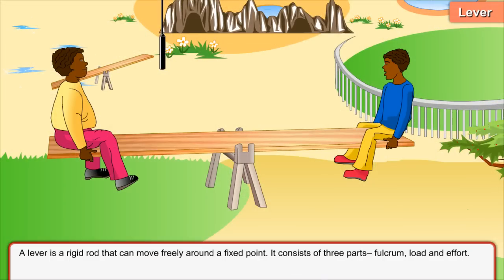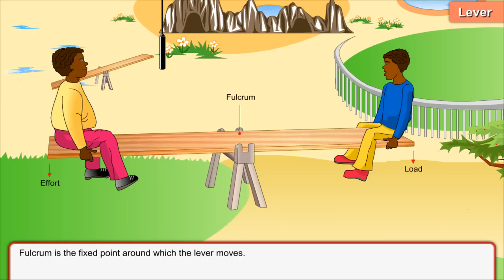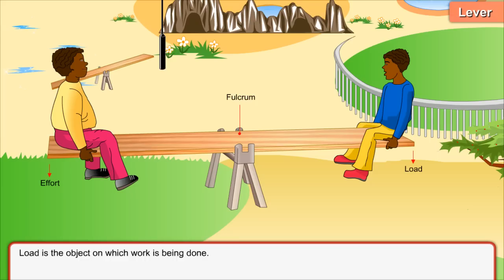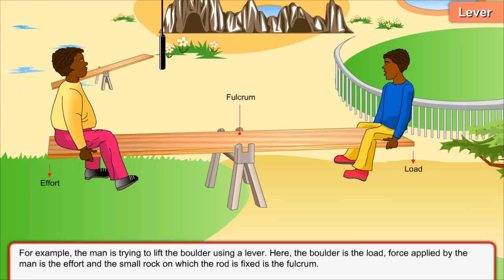Lever. A lever is a rigid rod that can move freely around a fixed point. It consists of three parts: fulcrum, load, and effort. Fulcrum is the fixed point around which the lever moves. Load is the object on which work is being done. Effort is the force applied on the lever.